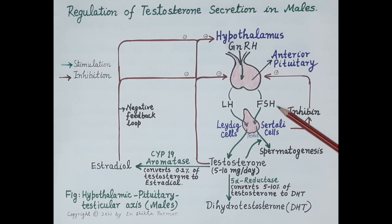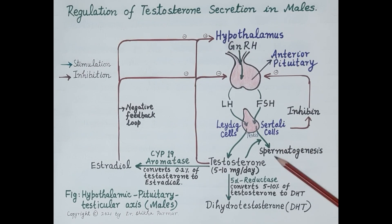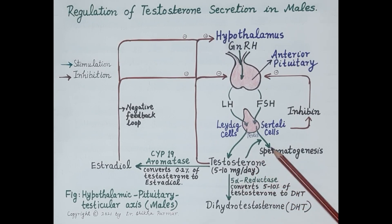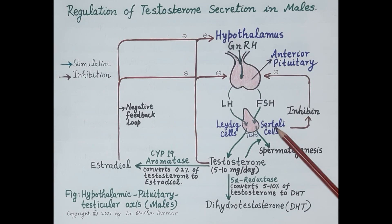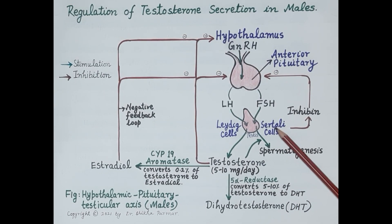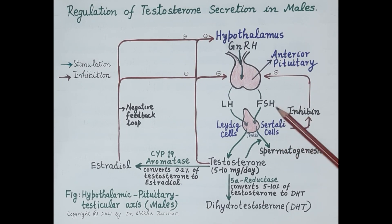Follicle-stimulating hormone is mainly responsible for stimulating the process of spermatogenesis in the Sertoli cells. Spermatogenesis is the process of production and maturation of sperms, and testosterone is required for this process. These Sertoli cells are located in the testicular seminiferous tubules and produce a protein called inhibin.